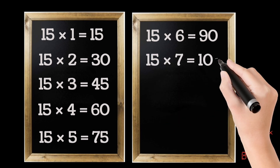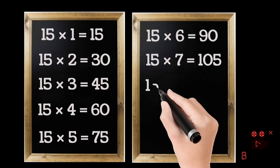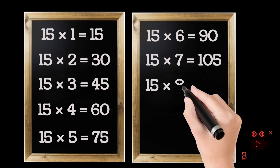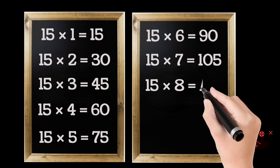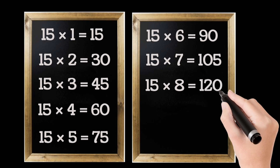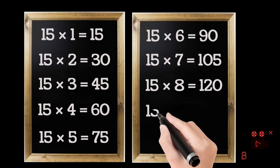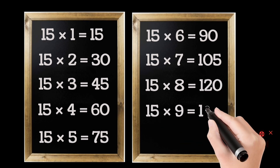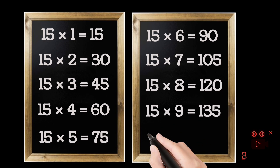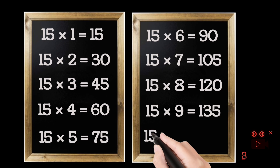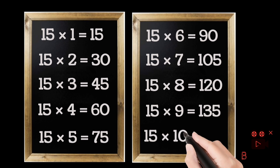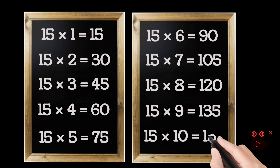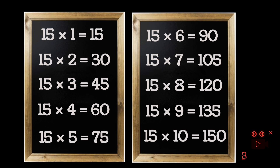15 sevens are 105. 15 eights are 120. 15 nines are 135. 15 tens are 150.